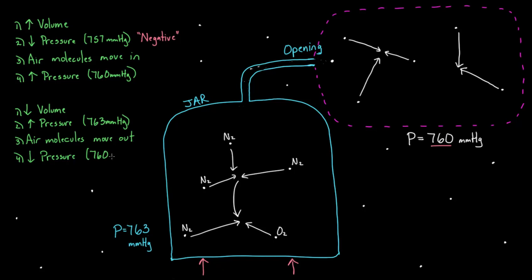The reason I say exactly 760 is because this process will continue until the number of collisions on the inside and outside of the jar are equal. When we were back at 763, sometimes people call this positive pressure — for the same reason they called it negative before. All they're doing is comparing 763 to atmospheric pressure, which is 760, and saying that's a plus three, a little bit positive. So when you compare things relatively, you use words like positive and negative. But if you're using just the total number in absolute terms, then you would stick to 757 or 763.